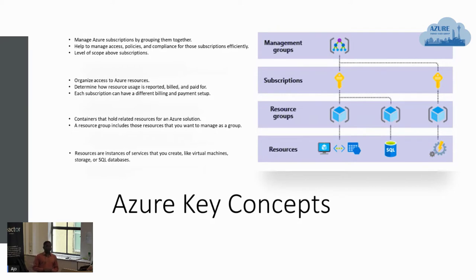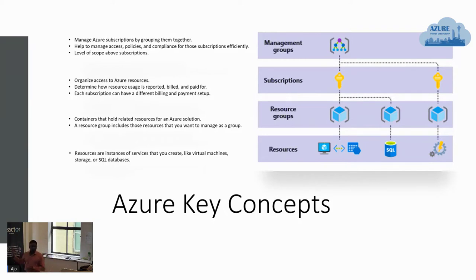For instance, if you want to build a virtual machine, that's a service offered and you call it a resource. The bot service I'm going to talk about is another resource. At enterprise level, different teams may not require all available services, so you bundle those into resource groups. Let's say I'm building a web application — I might need a virtual machine and a deployed application, so I bundle those two into a particular resource group.